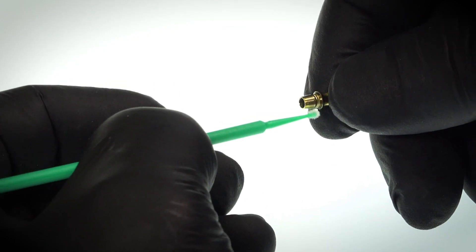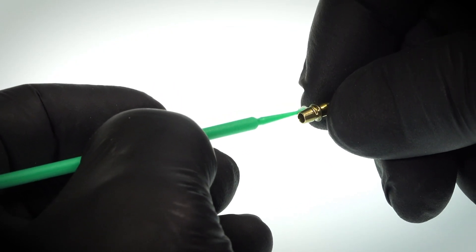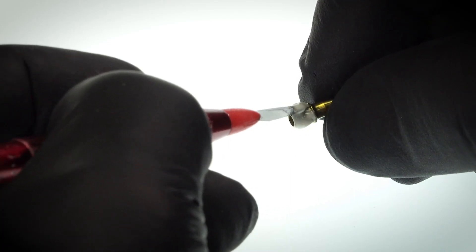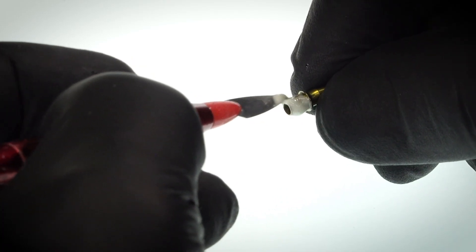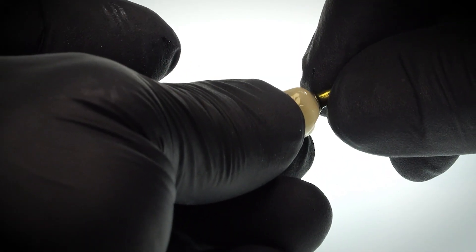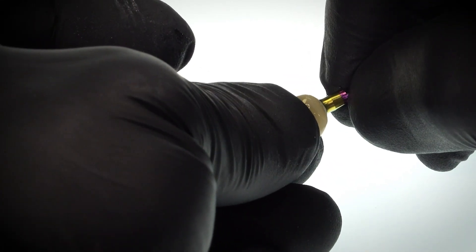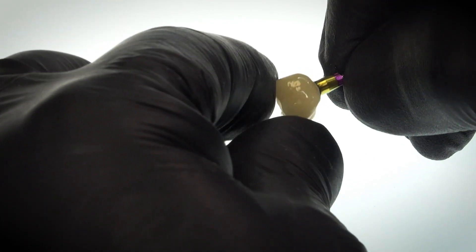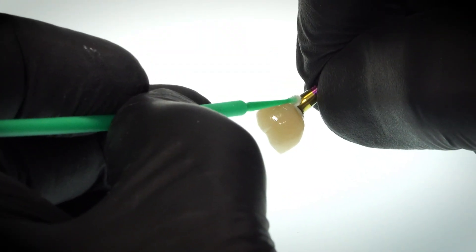Apply metal primer to clean the surface from dirt and oils. Then, apply cement evenly onto the tie base. Assemble the crown and check again the alignment between the crown and the tie base. Clean any excess cement.